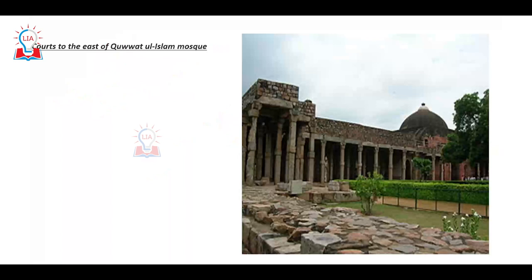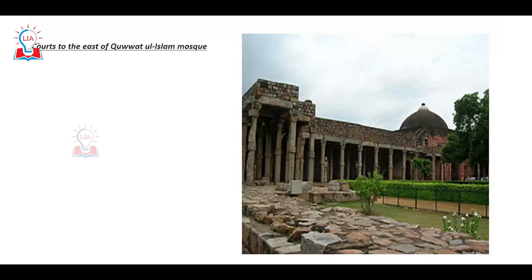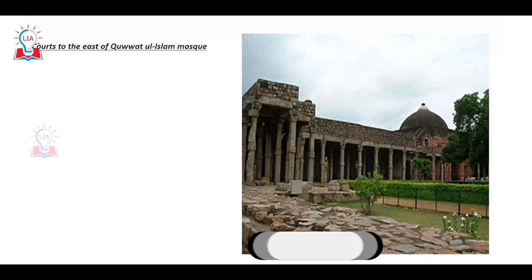Look at this — this is the court on the east of the mosque, which depicts the early architecture of the Kiljis.